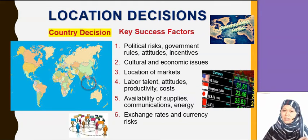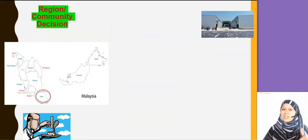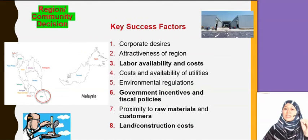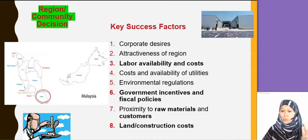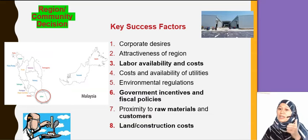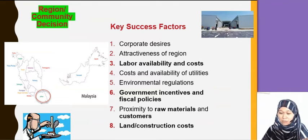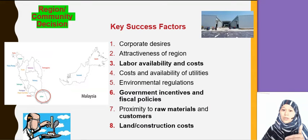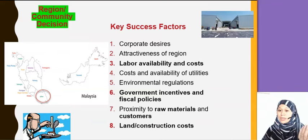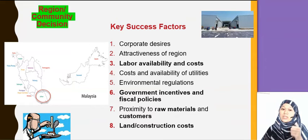When you decide on the country, you go deeper — this is the region or community decision. When you decide on Malaysia, which negeri do you want to go to? For example, Johor. You check if it's an attractive region, whether labour is available and what the cost is, kemudahan and infrastructure, utilities, environmental regulation, government incentives, proximity to raw material, and what are the land and construction costs in Johor.